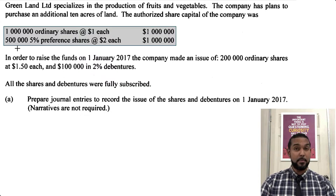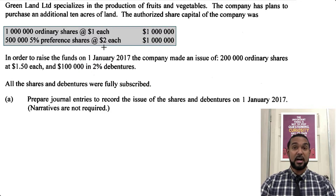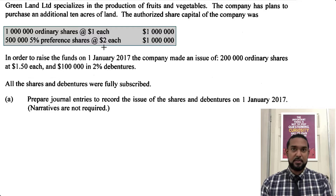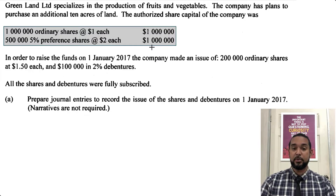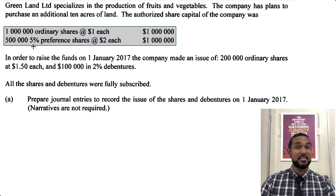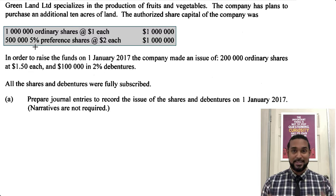The 500,000 is the number of preference shares. The $2 is the par value for the preference shares — you can have different share types with different par values, they don't all have to have the same value. When you multiply 500,000 by two, you get the $1 million worth of preference shares. The 5% is the dividend rate on the preference shares, and that does not factor into the value of the preference shares.